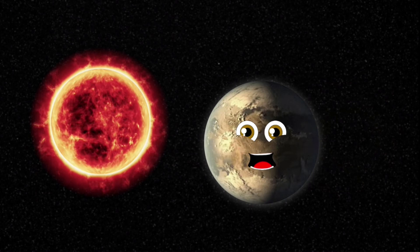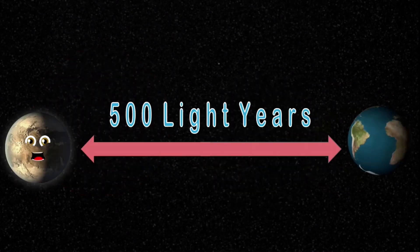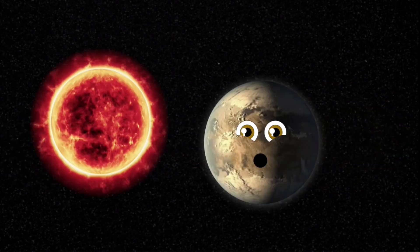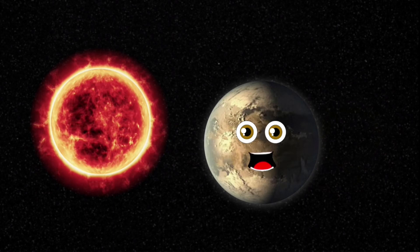Kepler-186 system is about 500 light years from Earth, I'd like to tout. In the constellation of Cygnus is where I reside, along with four companion planets we don't try to hide.